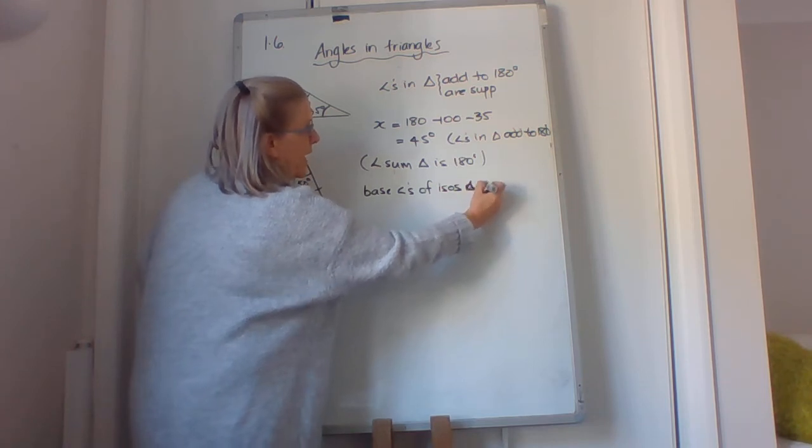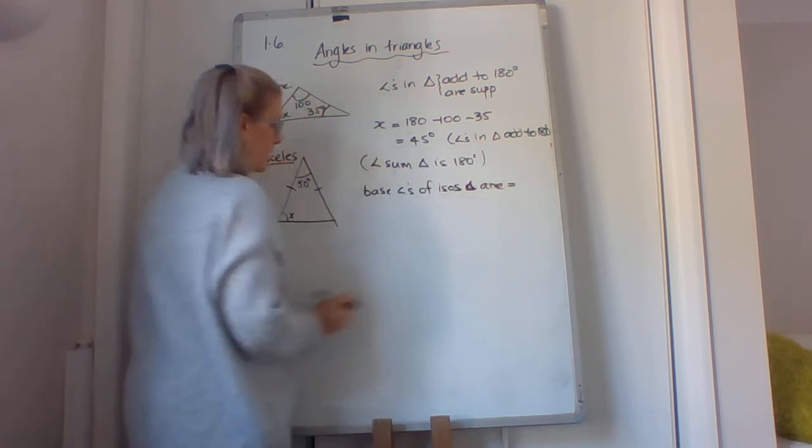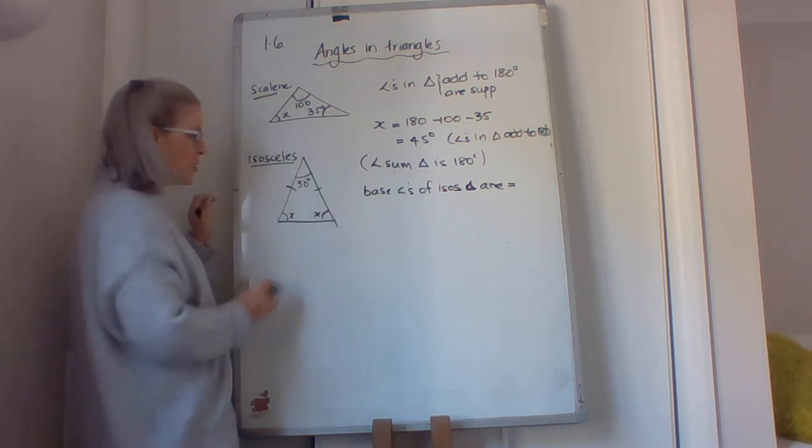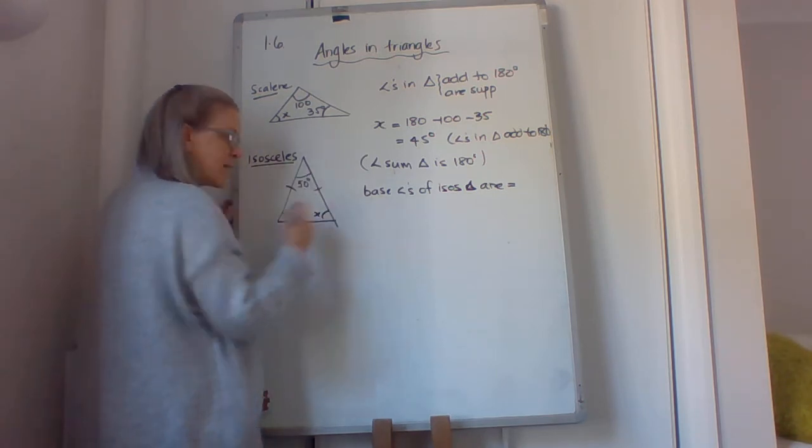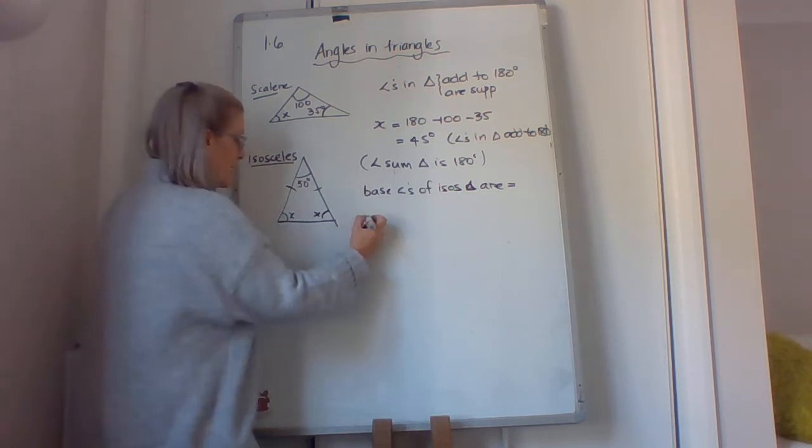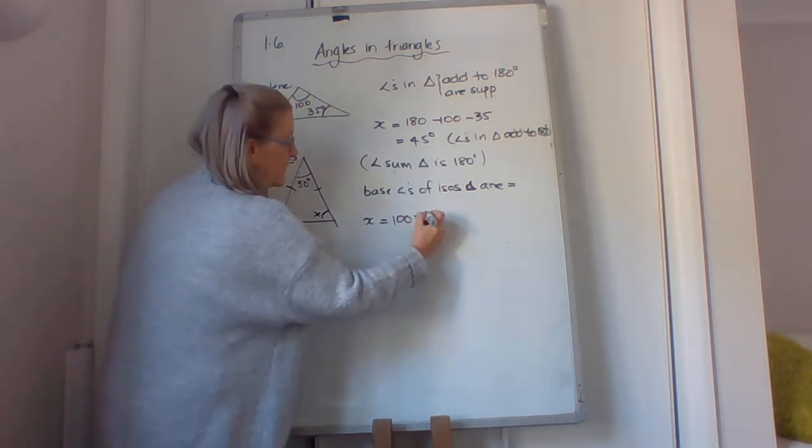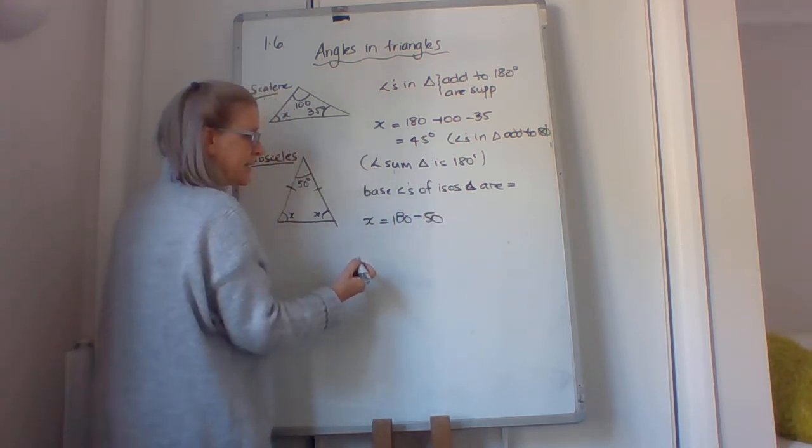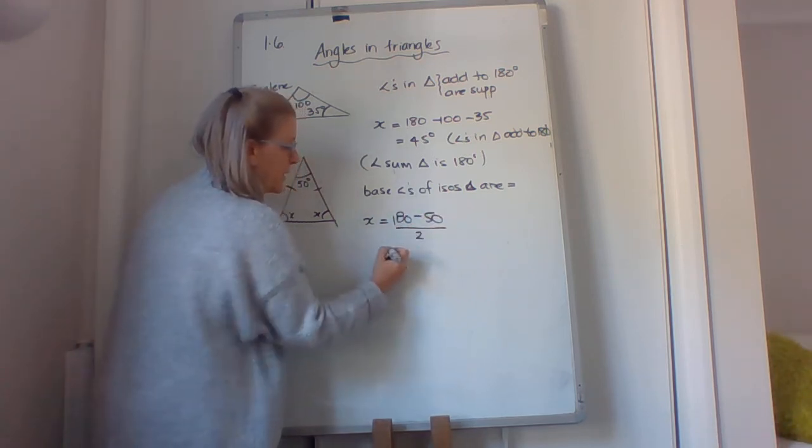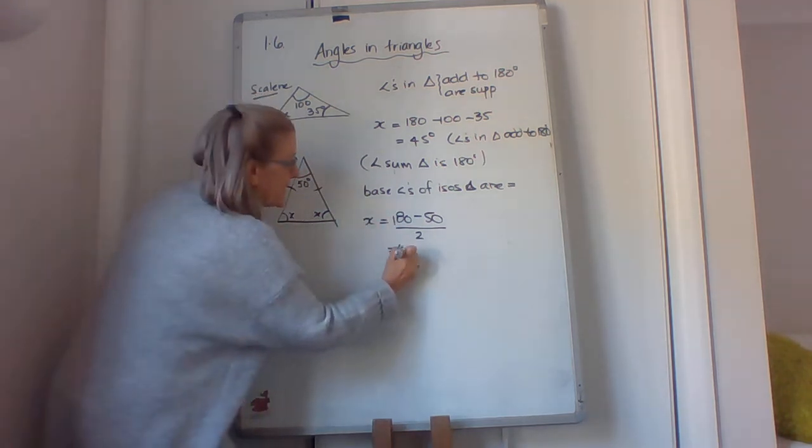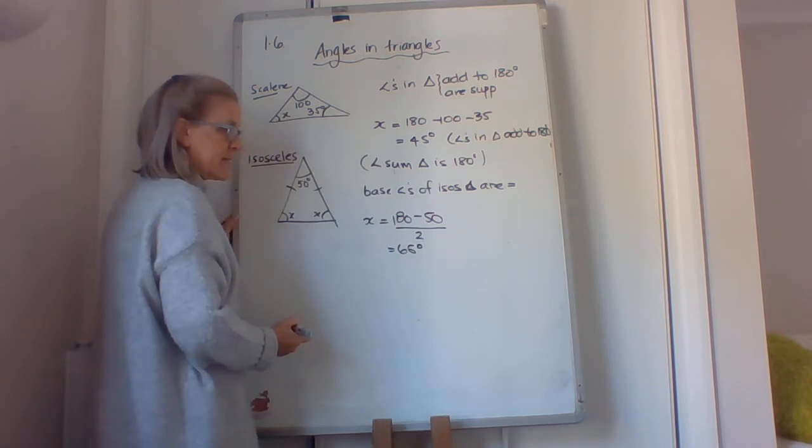So these two are both going to be x, even though that one wasn't given to us. So we've got angle sum of a triangle is 180, so x equals 180 minus 50 divided by 2. So that's 130 divided by 2 is 65 for each of the x's.